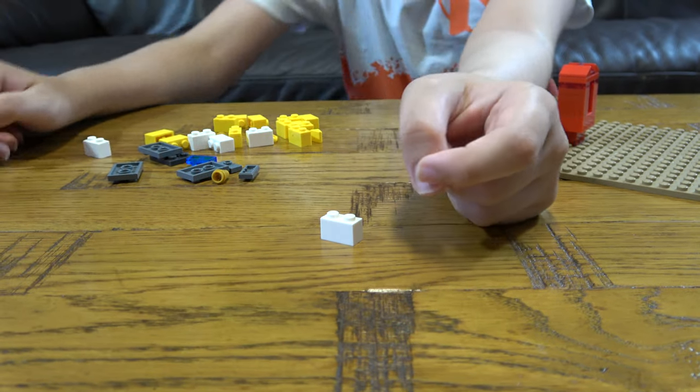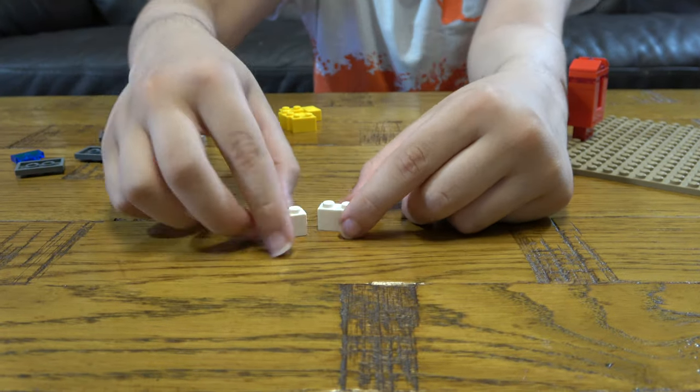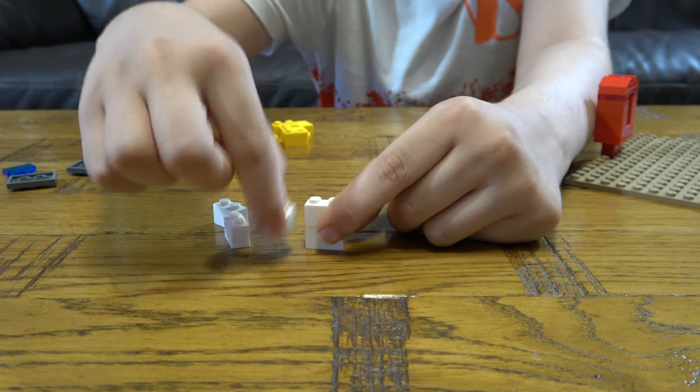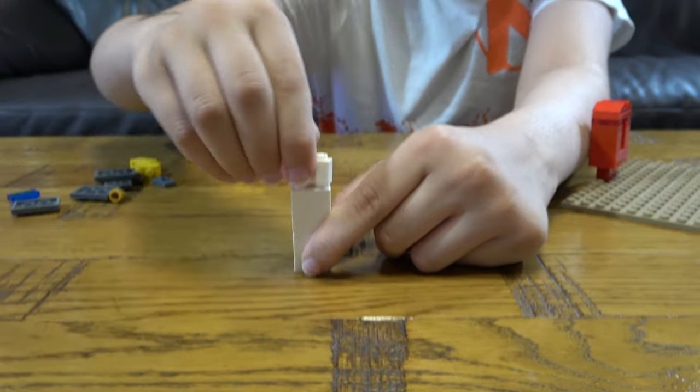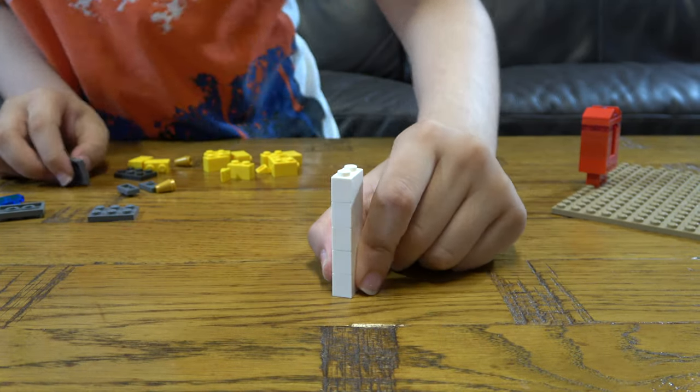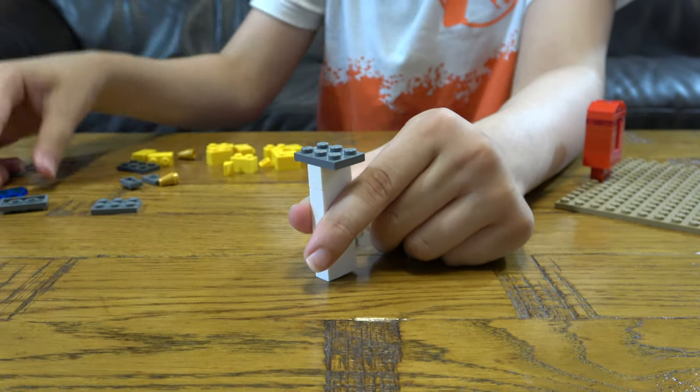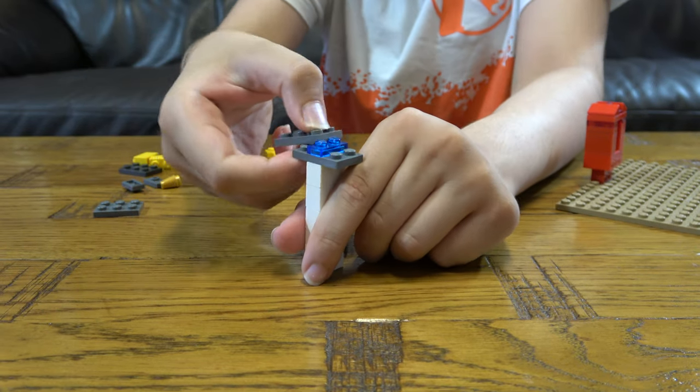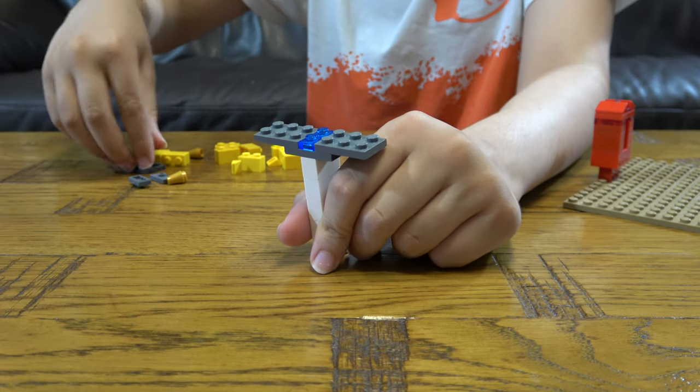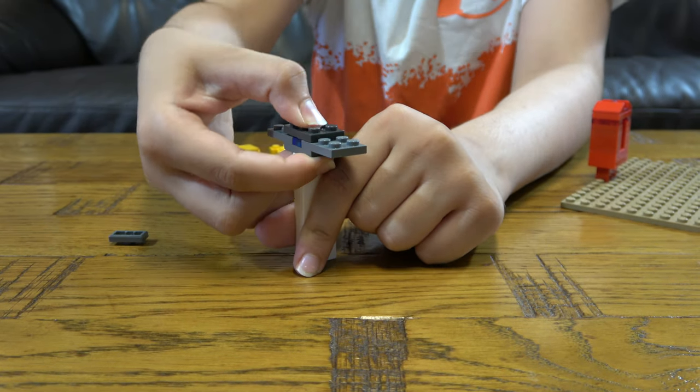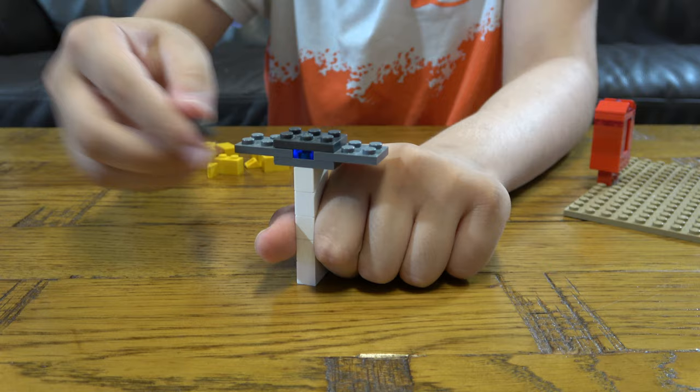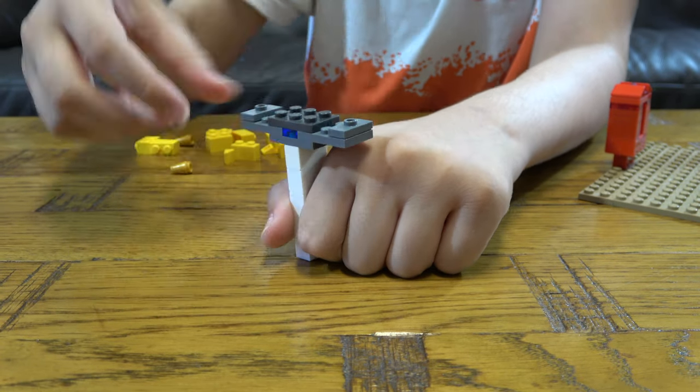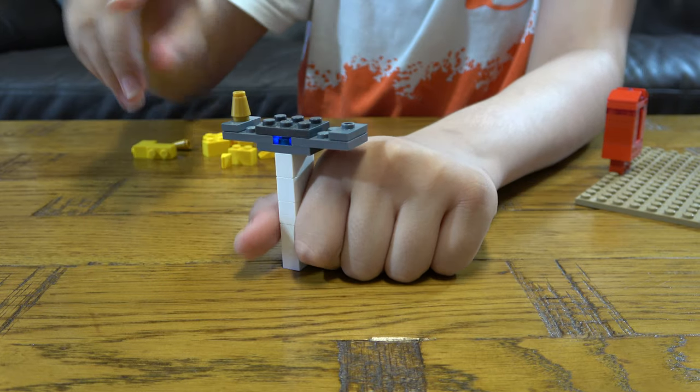So for the sword guys, we're gonna get five of these, two, three, four, five, put them on top of each other for the handle of the sword, and get one of these, put one of these blue ones on top of each other, put this here, then get two of these, put these here.